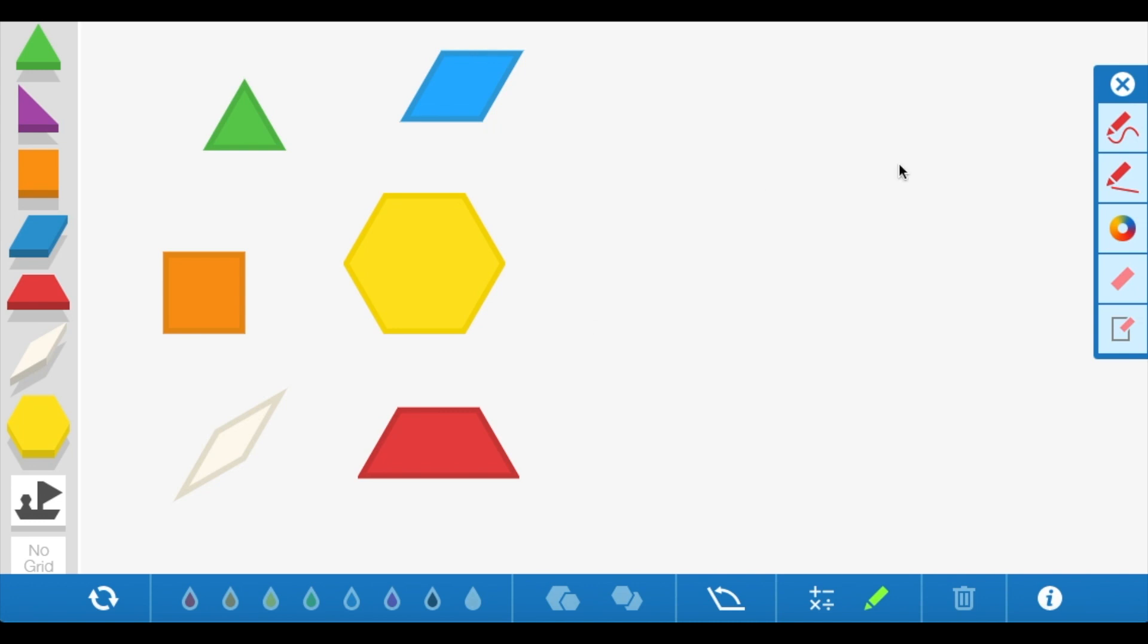If a shape is open, that means that not all of its sides connect at the vertices, or the corners. So it might look a little like this. Now this shape looks like it could be a rectangle, but it's not because of this opening right here.